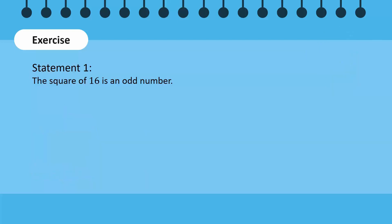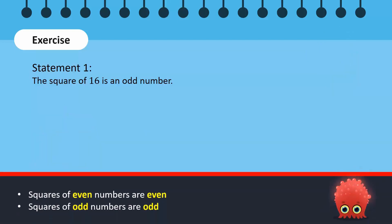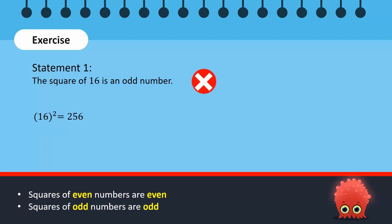Let us review. Recall that the square of an even number is always even, while the square of an odd number is always odd. 16 is an even number, since it is divisible by 2. So the square of 16 is an even number. Therefore, this statement is incorrect.